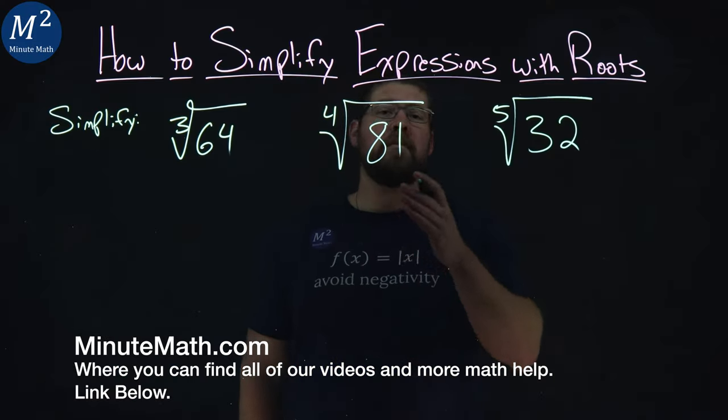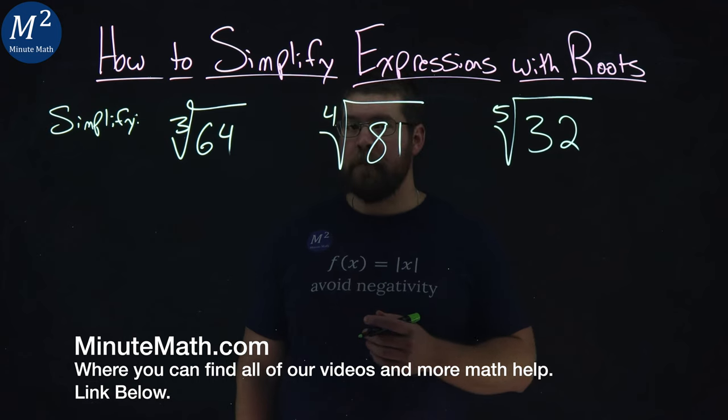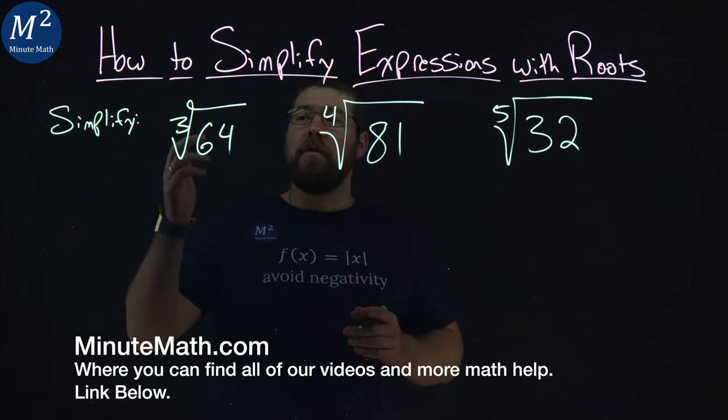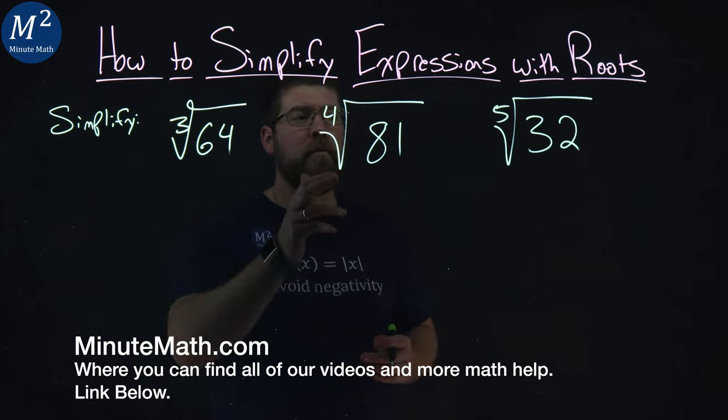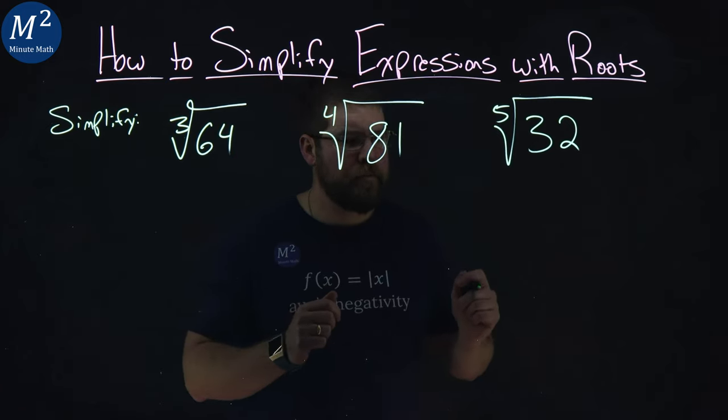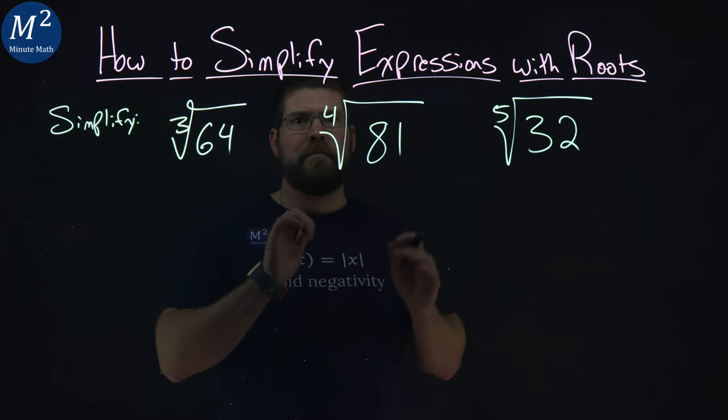We have three problems here that we need to simplify. Before we talked about square roots, but now we have the third root, or cube root, and the fourth root, and the fifth root. We're going to go through each one and how they're slightly different.